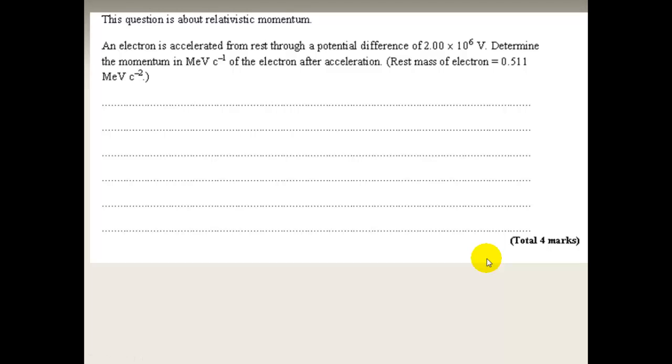Another question. This question is about relativistic momentum. An electron is accelerated from rest through a potential difference of 2 million volts. It will end up with 2 MeV and it has a rest mass of 0.511 MeV. Now how do we do that? How do we find the momentum afterwards?